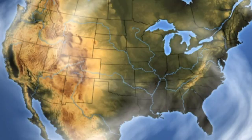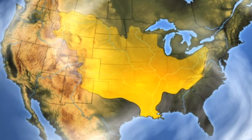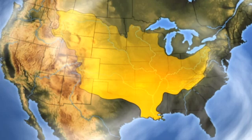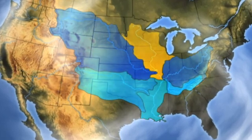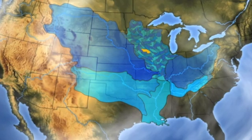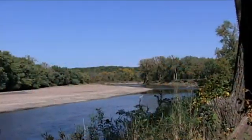A watershed is the land area that drains to a body of water — be it a lake, a stream, a pond. And watersheds vary in size. For example, the Mississippi River watershed drains 40 percent of the entire United States. That massive watershed can be broken down into several large watersheds, which can be broken down even further into smaller watersheds, scaling all the way down to areas that may be just a few square miles in size.